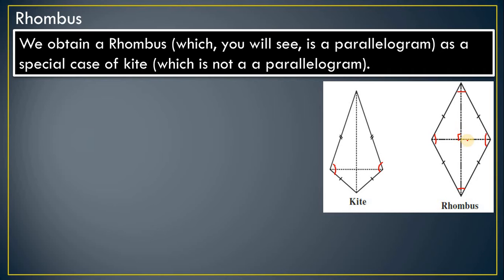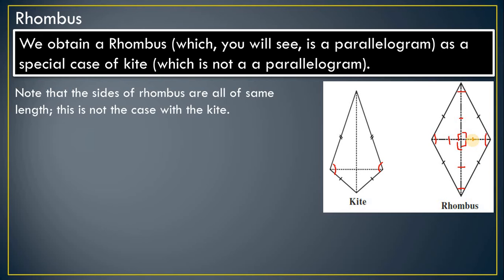The diagonals of a rhombus bisect each other perpendicularly — they make an angle of 90 degrees at every intersection. The diagonals also bisect each other, meaning the distance from the center to each end is equal on both sides. This is the key concept of the rhombus: all sides are of the same length.